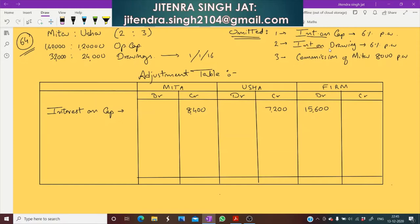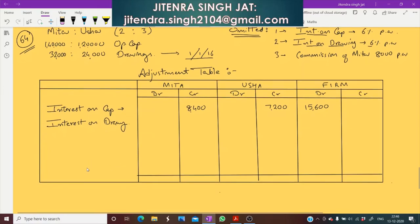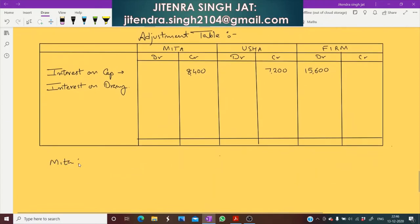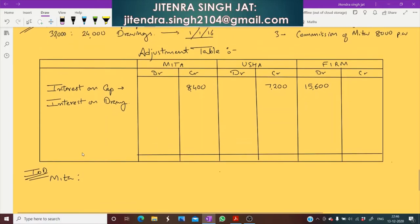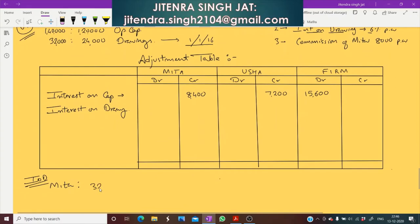Interest on drawings was also not charged at 6% per annum. Since the drawings were made on 1st January 2016, we calculate interest for 3 months. For Meeta: 32,000 × 6% × 3/12 = 480 rupees. So 480 will be debited to Meeta's account.